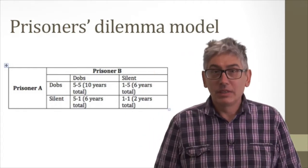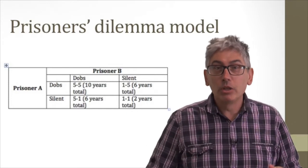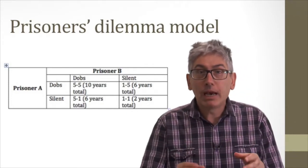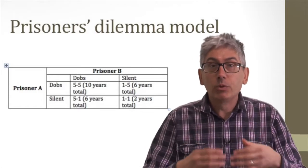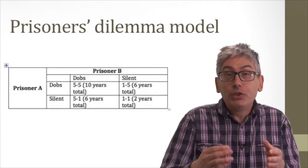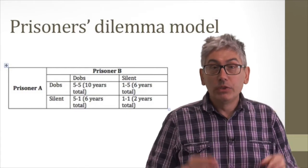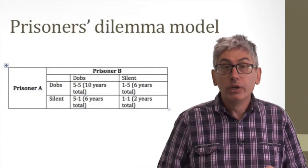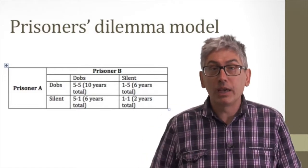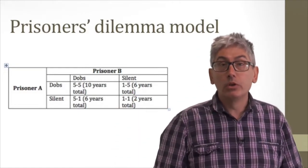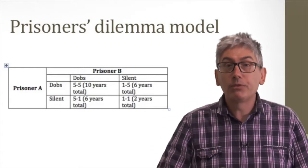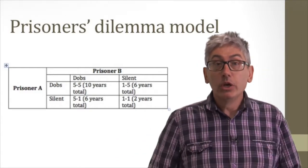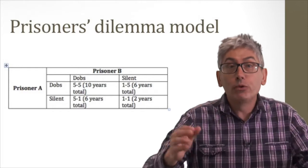This, that's the prisoner's dilemma, not the etymology of porridge, can be mapped out in terms of the years without parole that each would serve in any given circumstance. Silent silent equals one plus one equals two years in total. Silent dob and vice versa, nought plus ten equals ten years in total. Dob dob, five plus five, ten years in total.